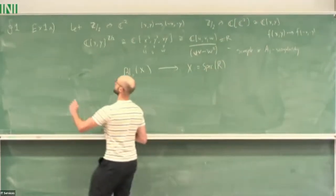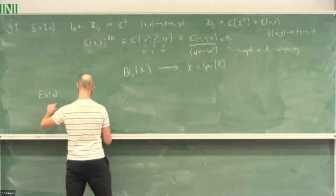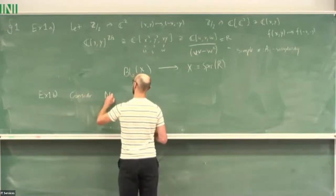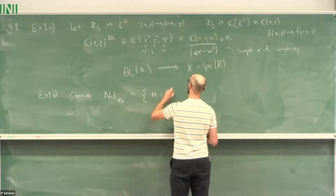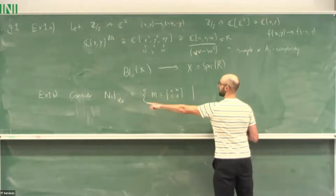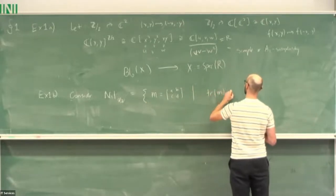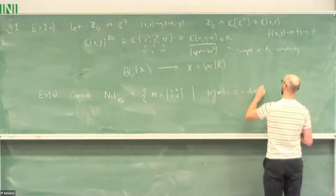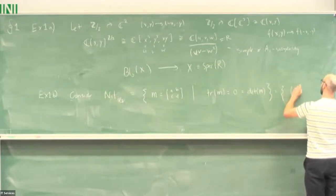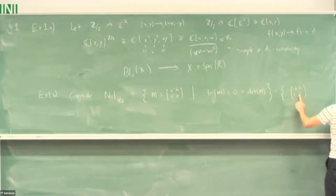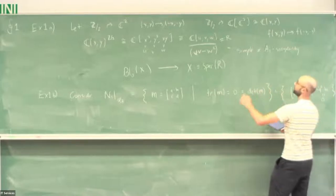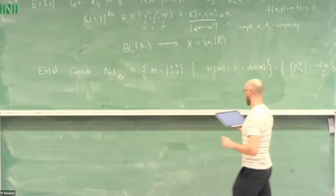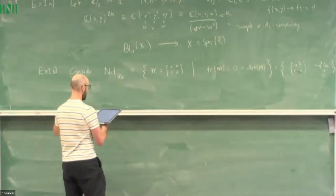Let's do it again differently. We'll consider the nilpotent cone of SL₂: matrices that are two-by-two with complex entries, where being in the Lie algebra of SL₂ means the trace is zero, and being nilpotent means the determinant is zero. Setting d = −a gives us the same equation as before. I'm not going to blow anything up; I'll think about it a little differently but achieve the same thing.